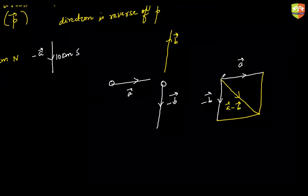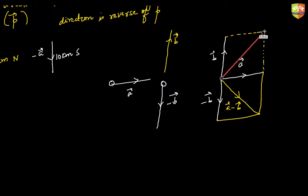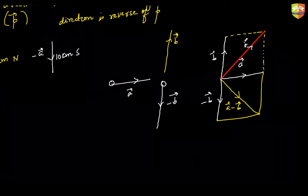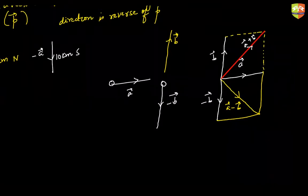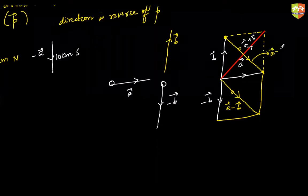If you complete a parallelogram with A and B, one diagonal represents A plus B. Interestingly, the other diagonal of the same parallelogram — directed from the tip of B toward the tip of A — represents A minus B. So in the same parallelogram, one diagonal gives A plus B and the other gives A minus B.